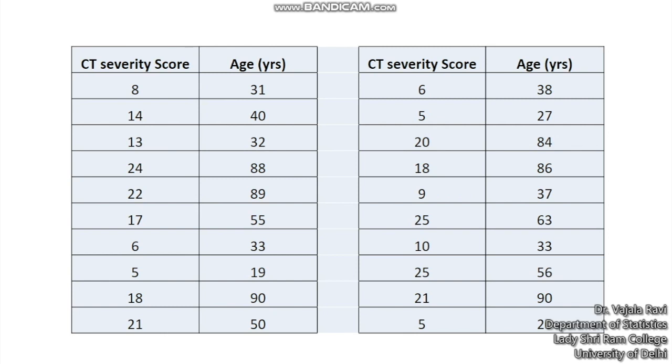Now somebody may come and say that if I have a particular age, then I can maybe determine the CT-severity score. So we are basically implying that age has an impact on the CT-severity score. Age becomes your independent variable and the CT-severity score becomes your dependent variable.